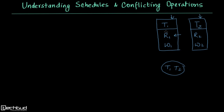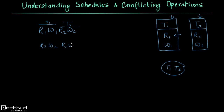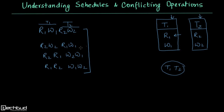We can have various options for executing the operations of T1 and T2. For example: R1 W1 R2 W2, or R2 W2 R1 W1, or intermixed like R2 R1 W2 W1, or R1 R2 W1 W2. These are the possible sequences in which we can execute the operations of two transactions, and these sequences are called schedules.